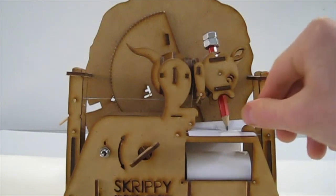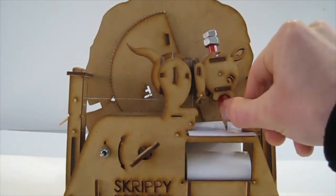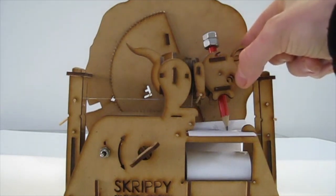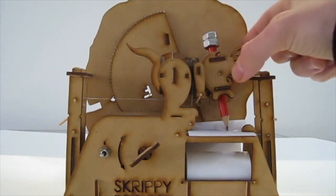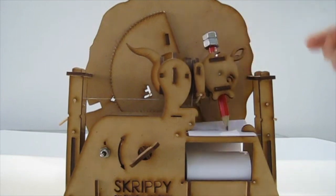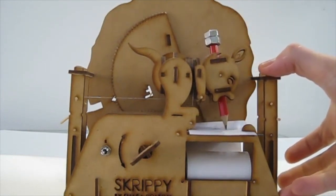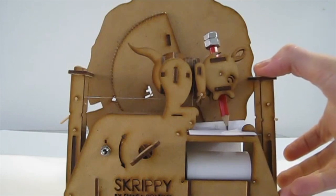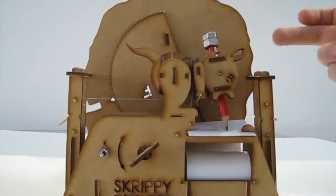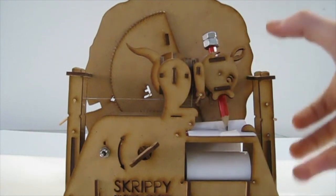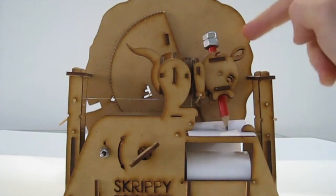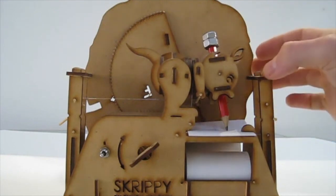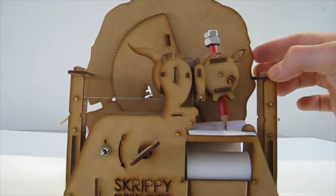So if I want to move the tip of the pencil so far in the X direction, I need to know how many degrees must Skrippy's head turn to achieve that. And then I need to know how much string do I need to pull off the drum to make Skrippy's head turn that many degrees. And then I need to know how many degrees must I rotate the lever to pull off that much string. And then I need to know how far must I push the cam follower to make the lever turn that many degrees. And that will be the radius. That change in distance of the cam follower will be the change in radius of our cam.